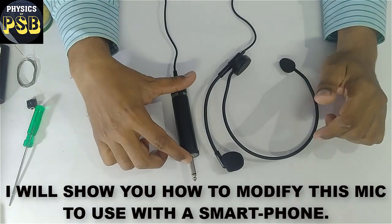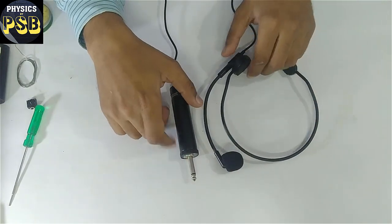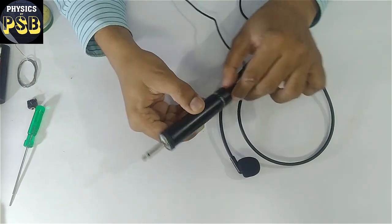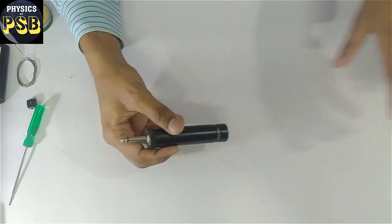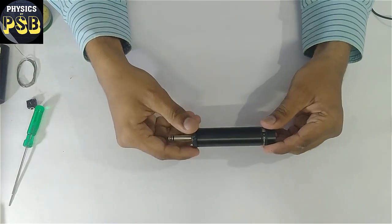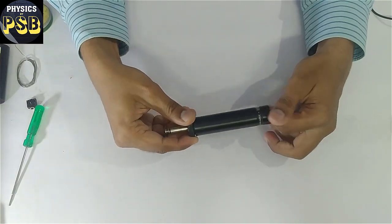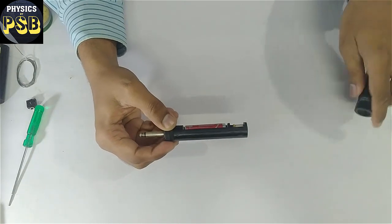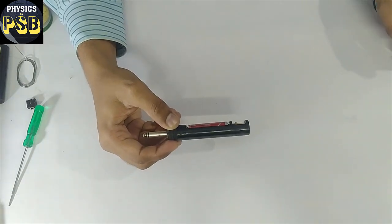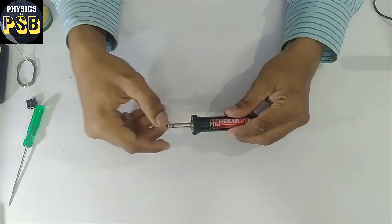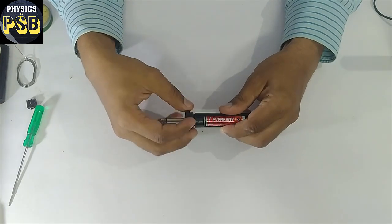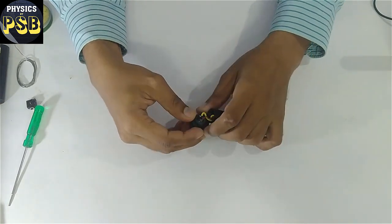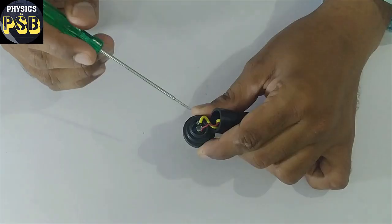Let's go ahead. For that I remove this part first and keep it aside. Now I rotate this in anticlockwise direction. It comes off this manner. Keep it aside. Now again rotate it in anticlockwise direction to remove this part. If you look here you find two wires.